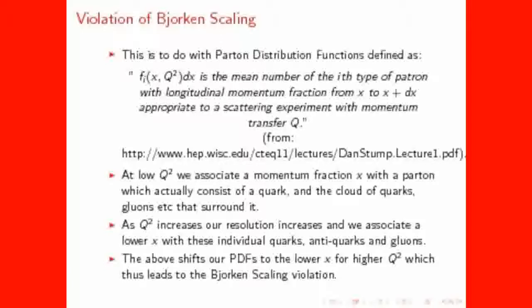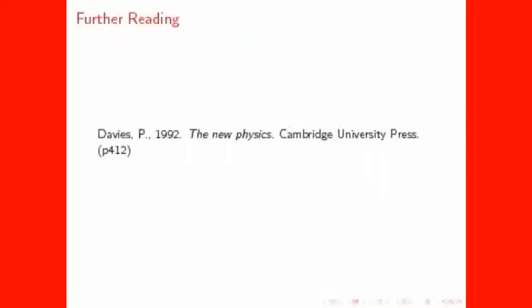Okay, so I know I didn't explain that last bit very well, or in fact any of it, but if you want a nice clear explanation of Bjorken scaling violation I recommend The New Physics by Paul Davies, which has a really nice description. Thanks for watching.